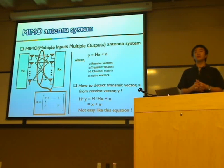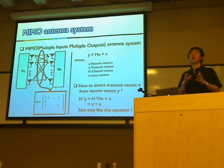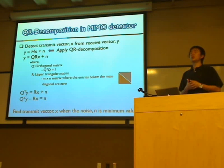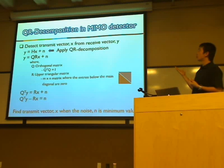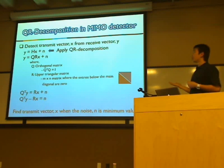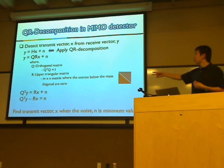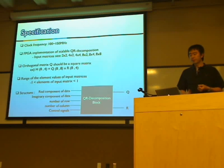To find the transmitted vector X from the received vector Y, we can use the inverse matrix of the channel characteristics H. However, as the matrix size grows larger, it becomes harder to find the inverse matrix. So we can use QR decomposition: decompose matrix H into Q and R, where Q is an orthogonal matrix and R is an upper triangular matrix with zeros below the main diagonal. With the final equation, we can find the transmitted vector X when the noise N is at its minimum value.